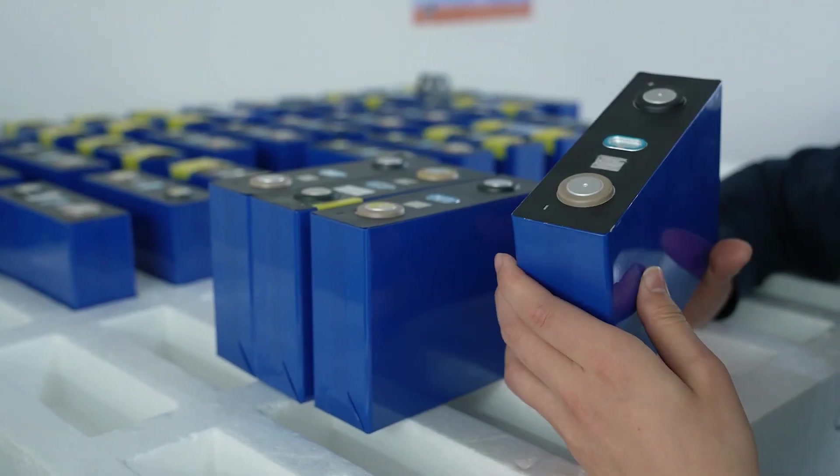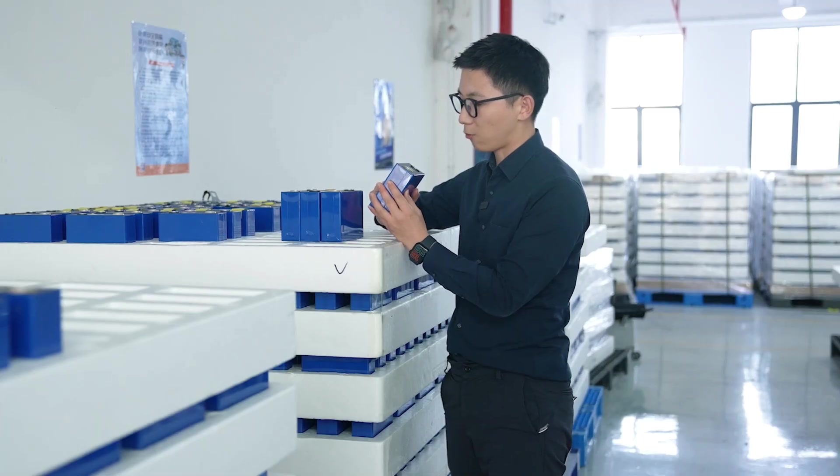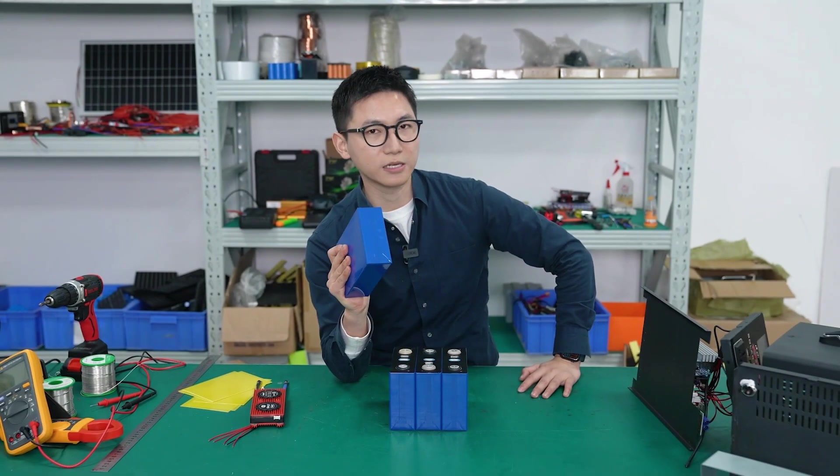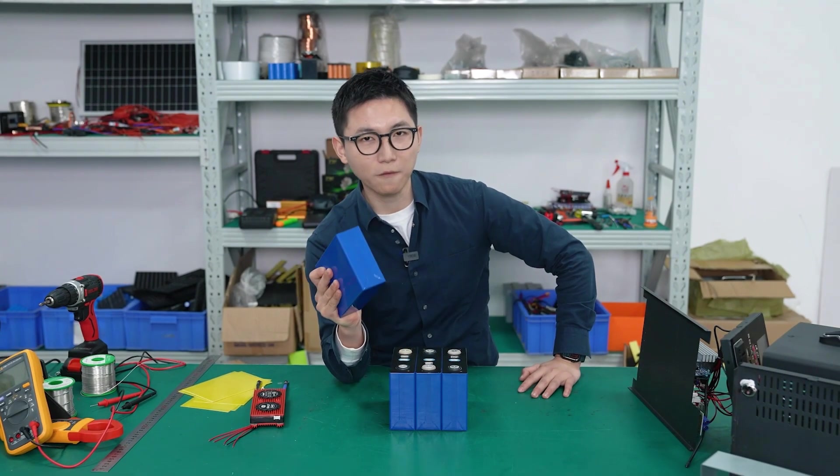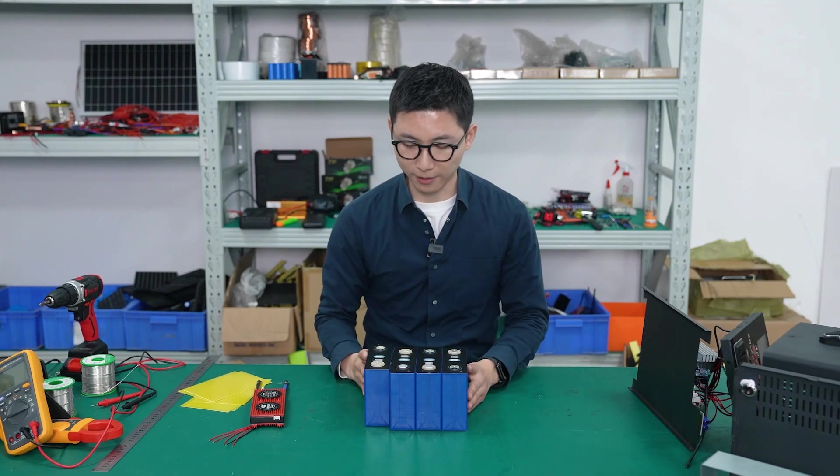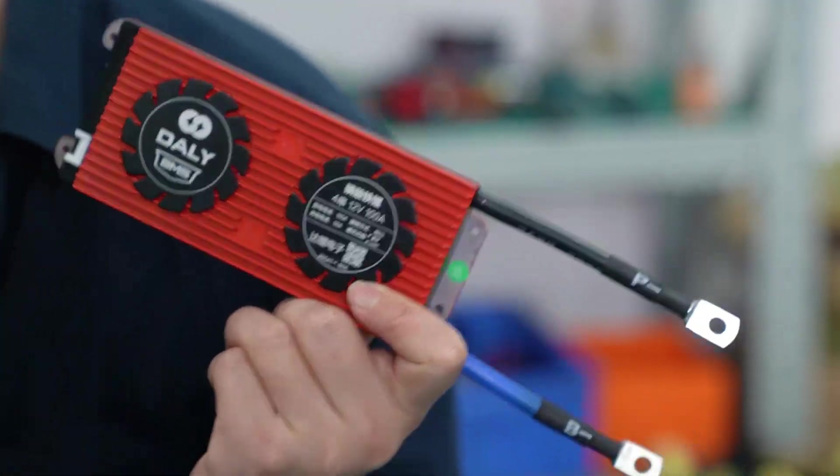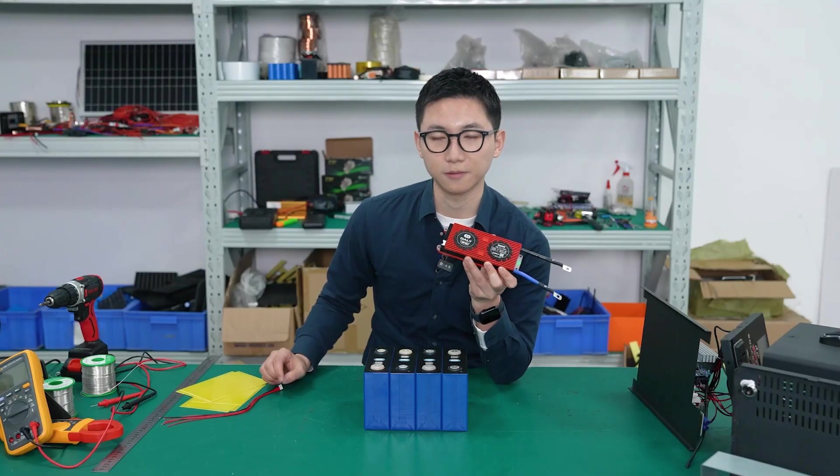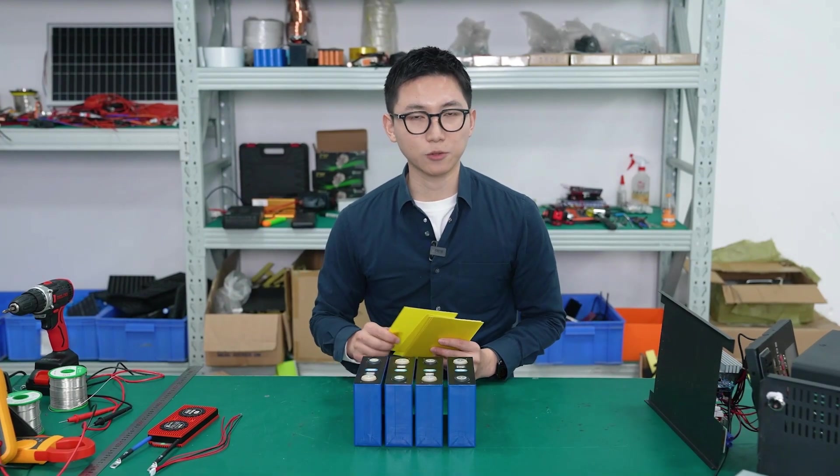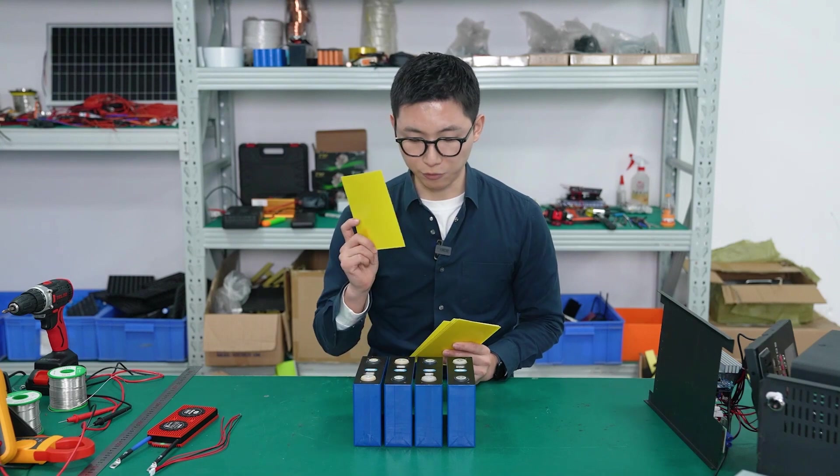LiFePO4 batteries with 100Ah capacity. Each single cell is 100Ah. We're going to make four strings in series for 12V for the outdoor power supply. Now we also prepare a BMS (battery management system). It's four strings, 12V, LiFePO4 BMS. And now let's do it. The first step is to make the installation.